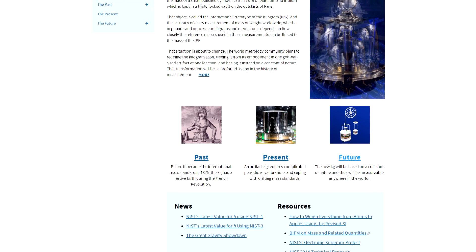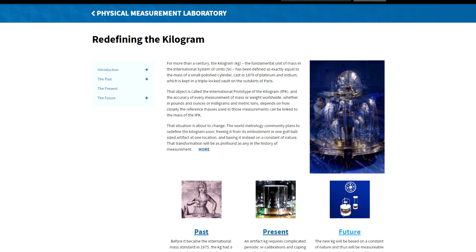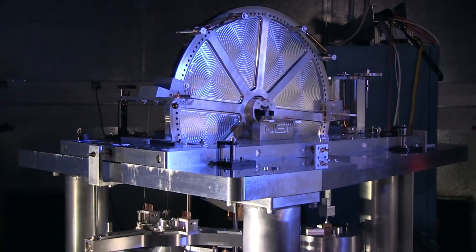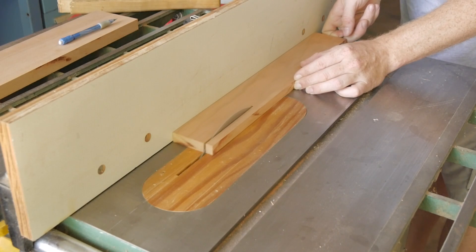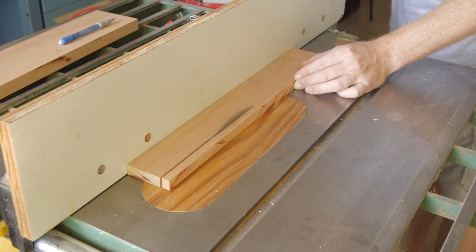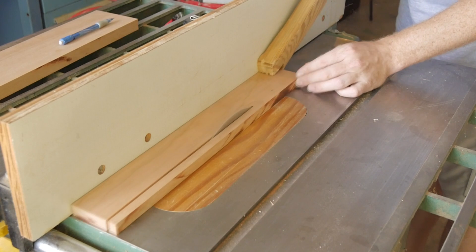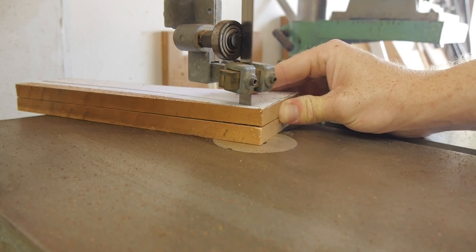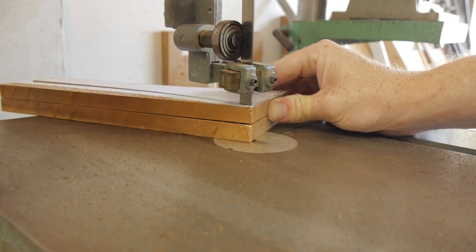So scientists are working to redefine the kilogram to be based on a fundamental physical constant, and they've come up with a pretty cool way to accomplish this. The watt balance. Fundamentally, the watt balance is a scale that uses an electromagnetic force to balance the weight of the object it's measuring. But it has a trick up its sleeve that allows it to measure with extreme accuracy and precision.